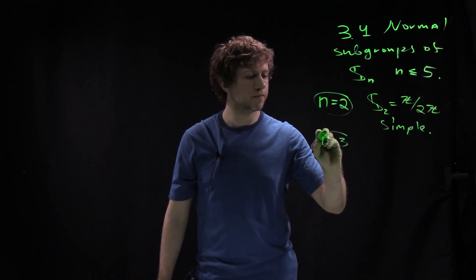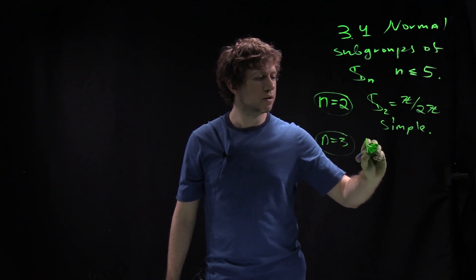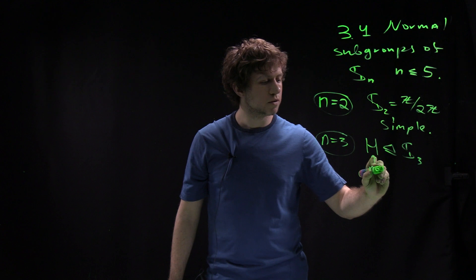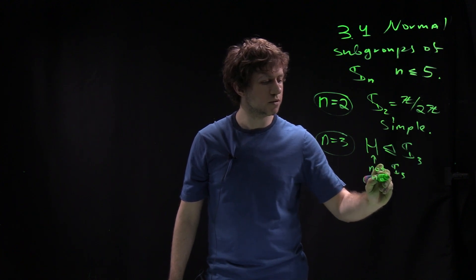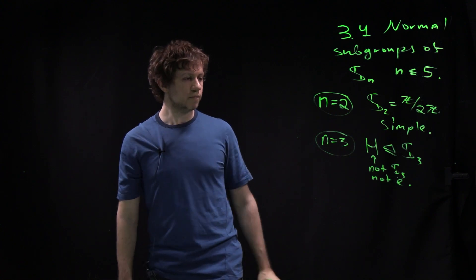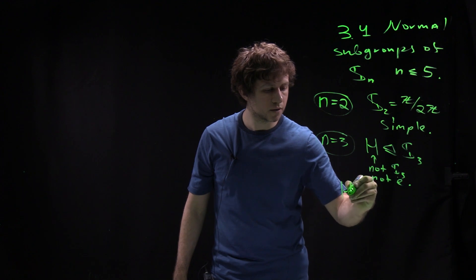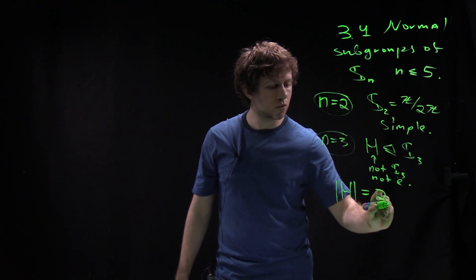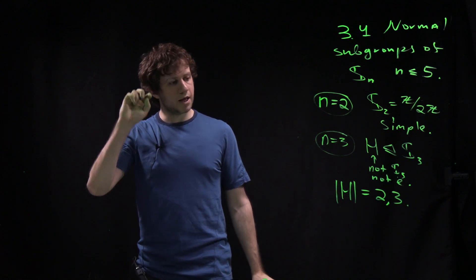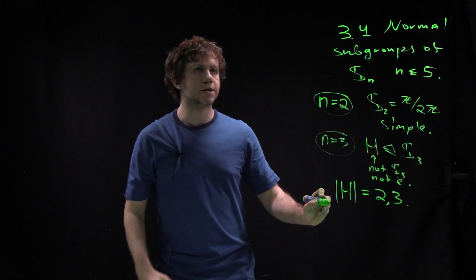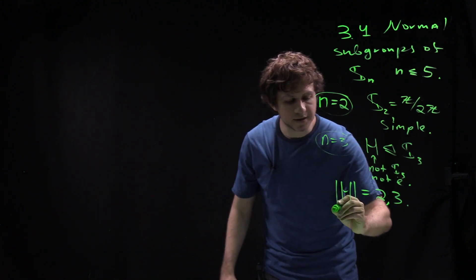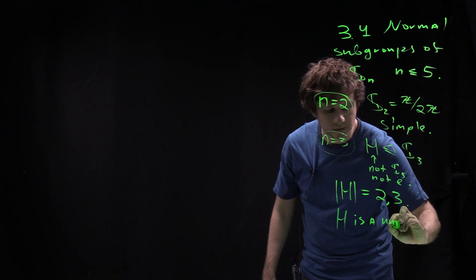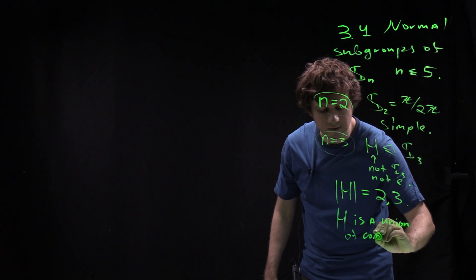What about n equal to 3? Suppose H is a non-trivial normal subgroup — so H is a subgroup of S3, not the identity and not S3 itself. The order of H divides 6 and is not 1 or 6, so it can be 2 or 3. One key idea is that H must be a union of conjugacy classes.